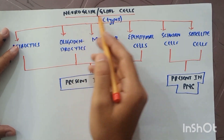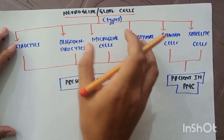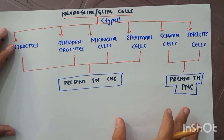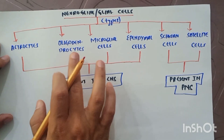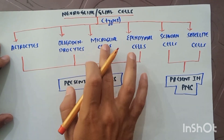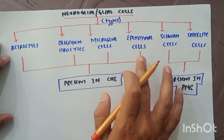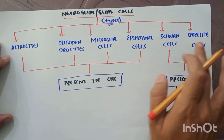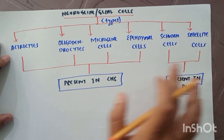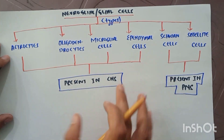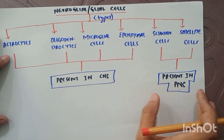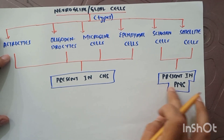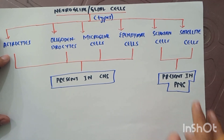The neuro glial or glial cells consist of six types: astrocytes, oligodendrocytes, microglial cells, ependymal cells, Schwann cells, and satellite cells. The first four types are present in the central nervous system, and the last two types are present only in the peripheral nervous system of the human body.